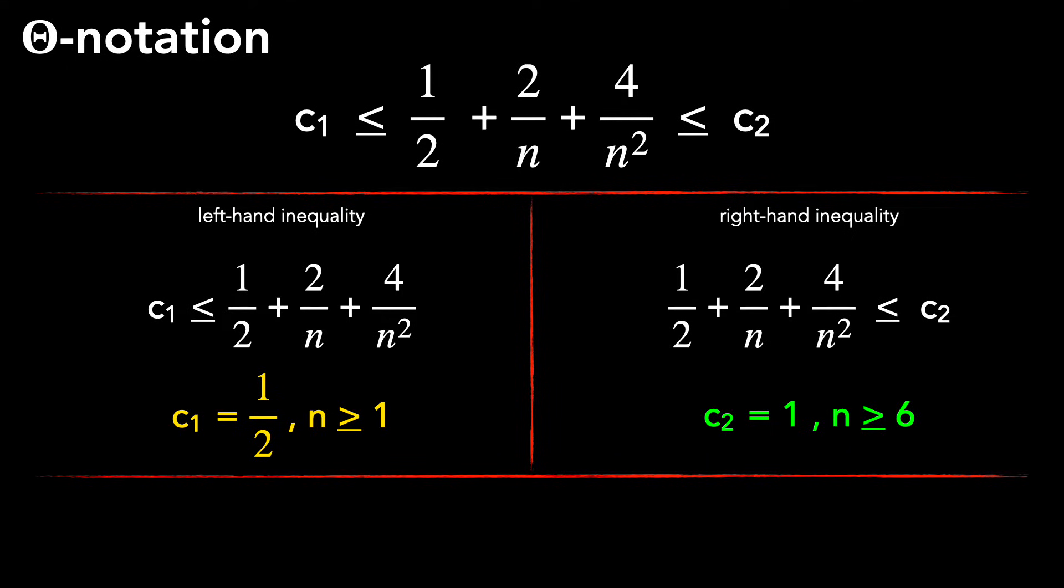Thus, by choosing c1 = 1/2, c2 = 1, and n0 = 6, our function equals Θ(n²). It's perfectly legitimate to choose other constants. It's important, however, that we find some constants that exist.